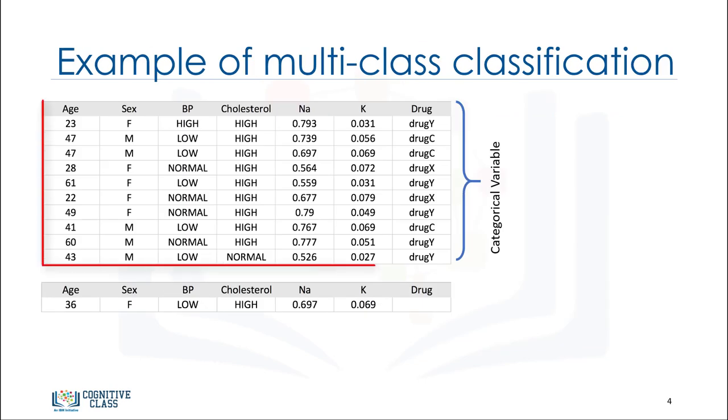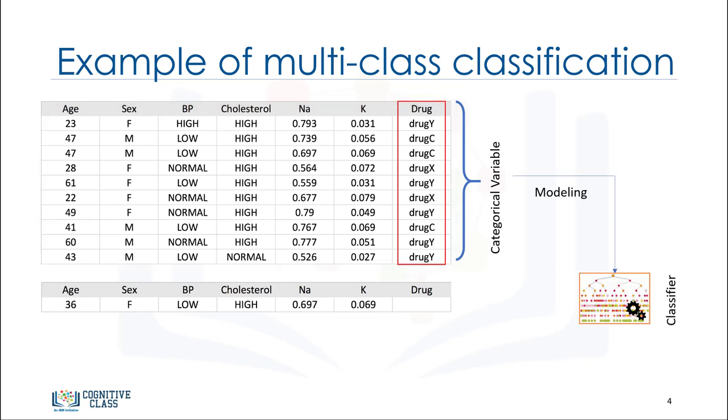For example, imagine you've collected data about a set of patients, all of whom suffered from the same illness. During their course of treatment, each patient responded to one of three medications. You can use this labeled dataset with a classification algorithm to build a classification model. Then you can use it to find out which drug might be appropriate for a future patient with the same illness. As you can see, this is an example of multi-class classification.